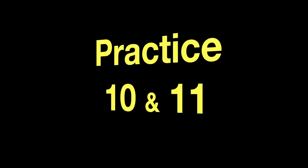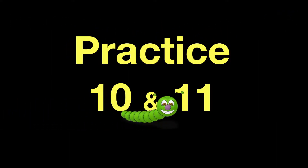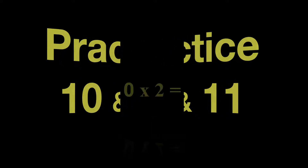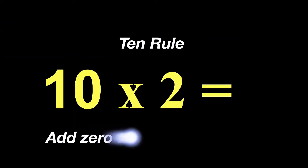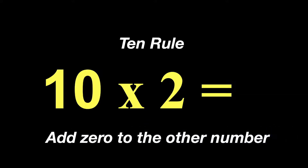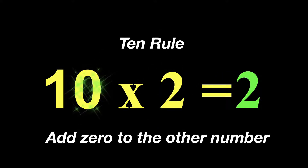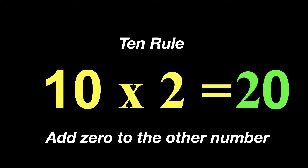Alright, let's practice a little bit — our 10s and 11s. 10 times 2: that's going to be our 10 rule, and remember that we are going to add 0 to the other number. The other number is 2, and then we are going to take our 0. So 10 times 2 equals 20.